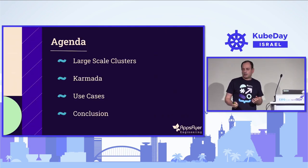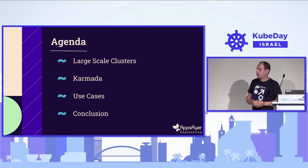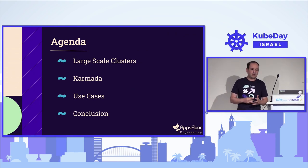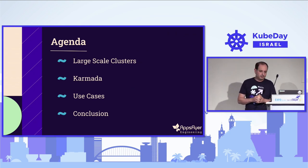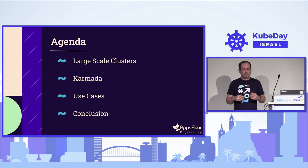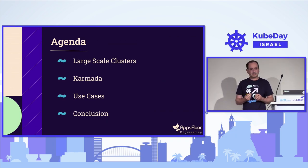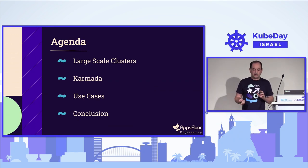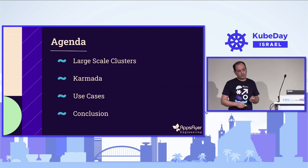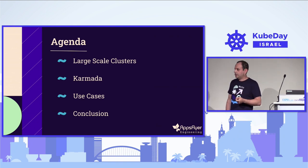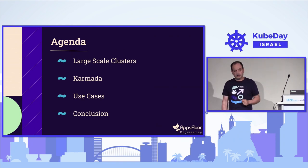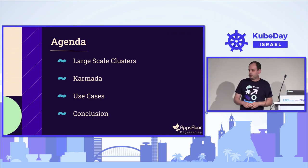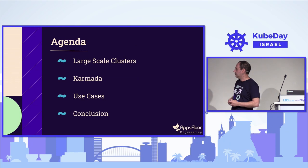A little bit about the agenda we're going to talk about today. We'll start with the challenges of working with large-scale clusters. We'll introduce Karmada and understand what its architecture is and a little bit about its API. I'll go over several use cases to demonstrate the use of Karmada and how it should simplify multi-cluster management. And we'll conclude what we discuss in this talk.